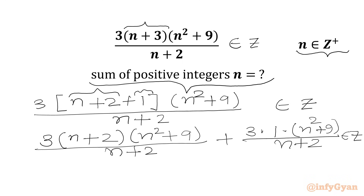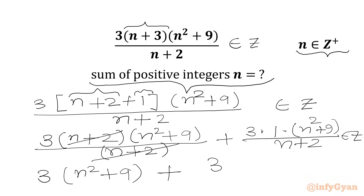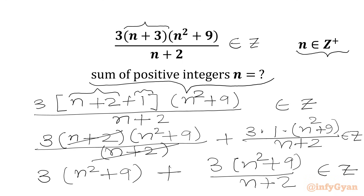Since n is a positive integer, we cancel (n+2) from numerator and denominator. So we can write 3(n²+9) plus 3(n²+9) over (n+2) is an integer. The first term 3(n²+9) is always an integer, so the constraint reduces to: 3 times (n²+9) over (n+2) must be an integer.